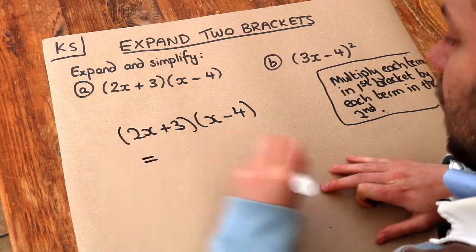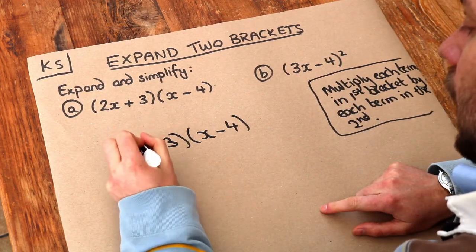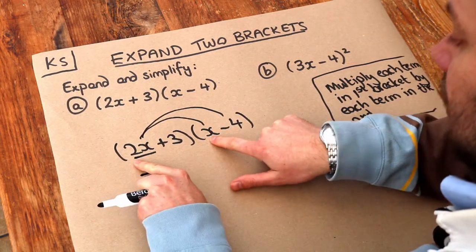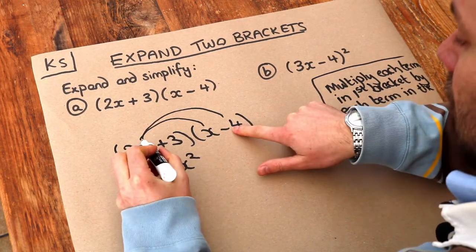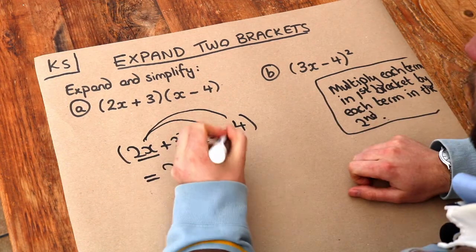So if we apply that to this we take the first term in the first bracket and multiply it by each of the things in the second bracket. So we've got the 2x times the x or 2x times x is 2x squared and 2x times minus 4, positive times negative is negative and the 2x times the 4 is just 8x.